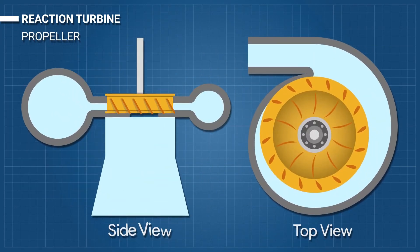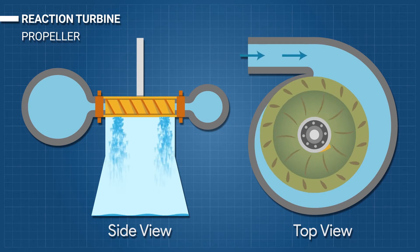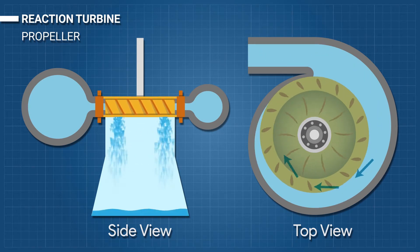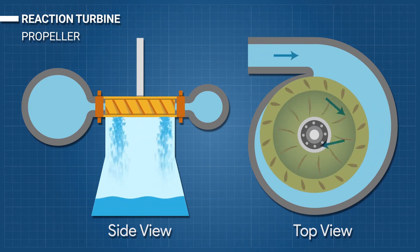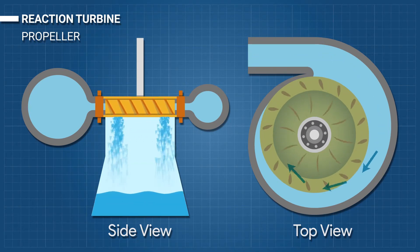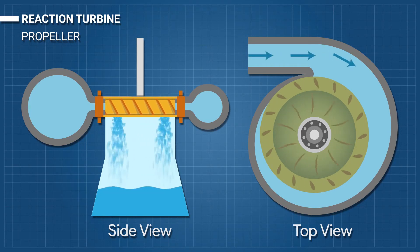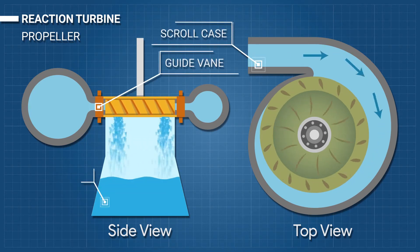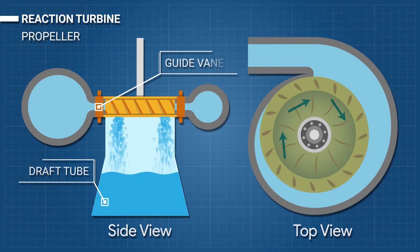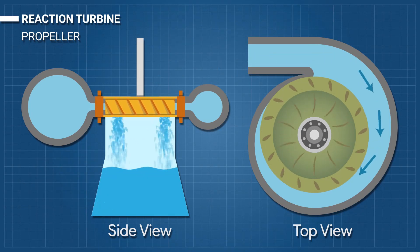Propeller: A propeller turbine generally has a runner with three to six blades in which the water contacts all of the blades constantly. The pitch of the blades may be fixed or adjustable. The major components besides the runner are a scroll case, guide vane, and a draft tube. There are several different types of propeller turbines.